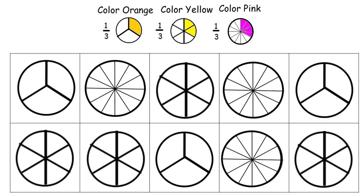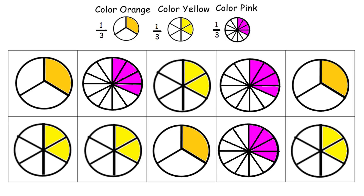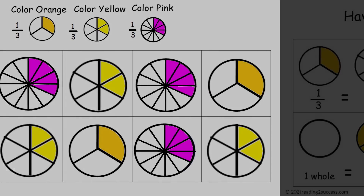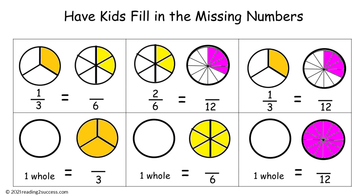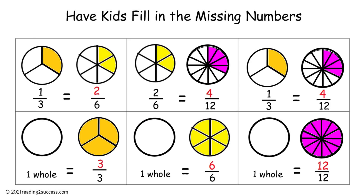Now have kids make equivalent fractions showing one-third, following the examples. For circles with three parts, they need to color one part orange. For circles with six parts, they need to color two parts yellow. And for circles with twelve parts, they need to color four parts pink. This is a completed example.